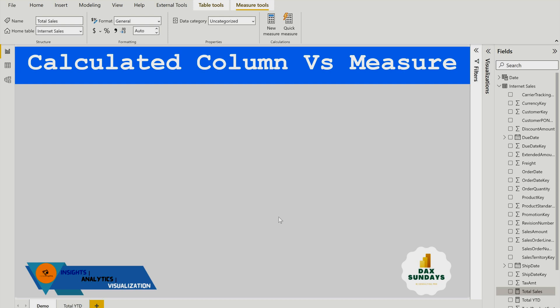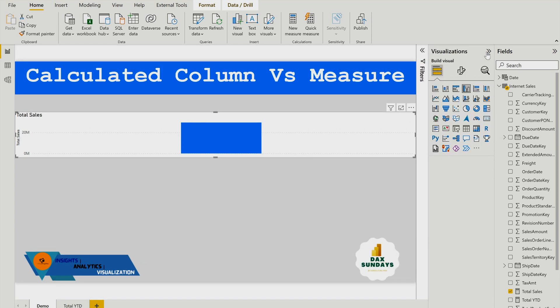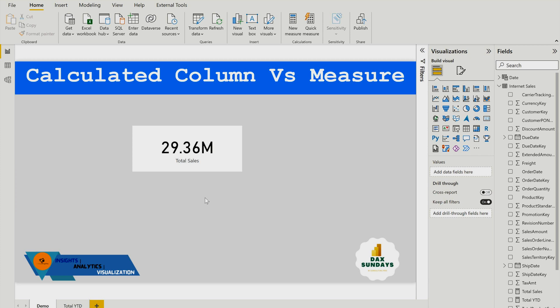Now since it's been created, I can drag and drop. So this is my total sales. This is the measure which is going to be used to aggregate the data at the cell context rather than the row by row context.